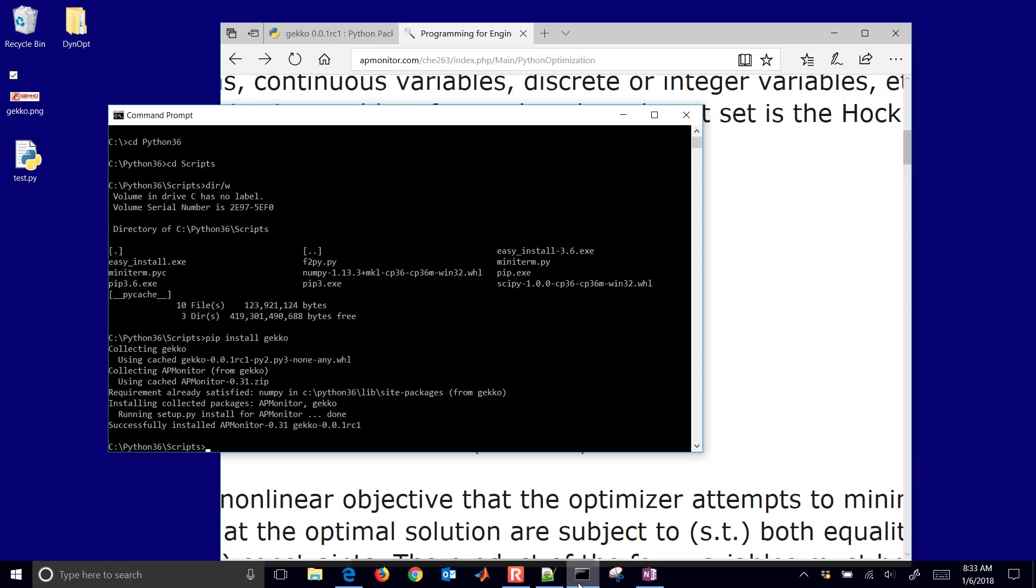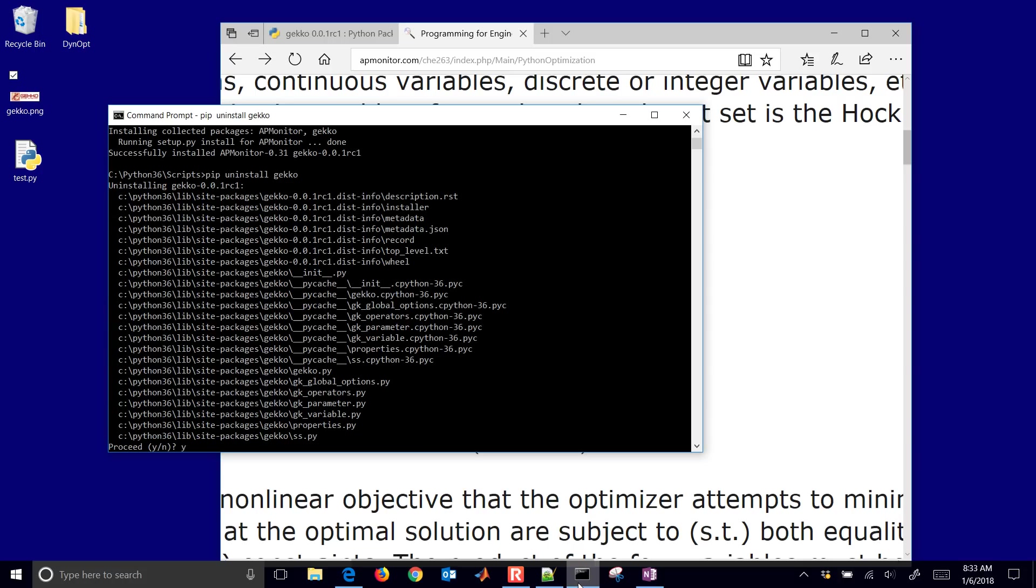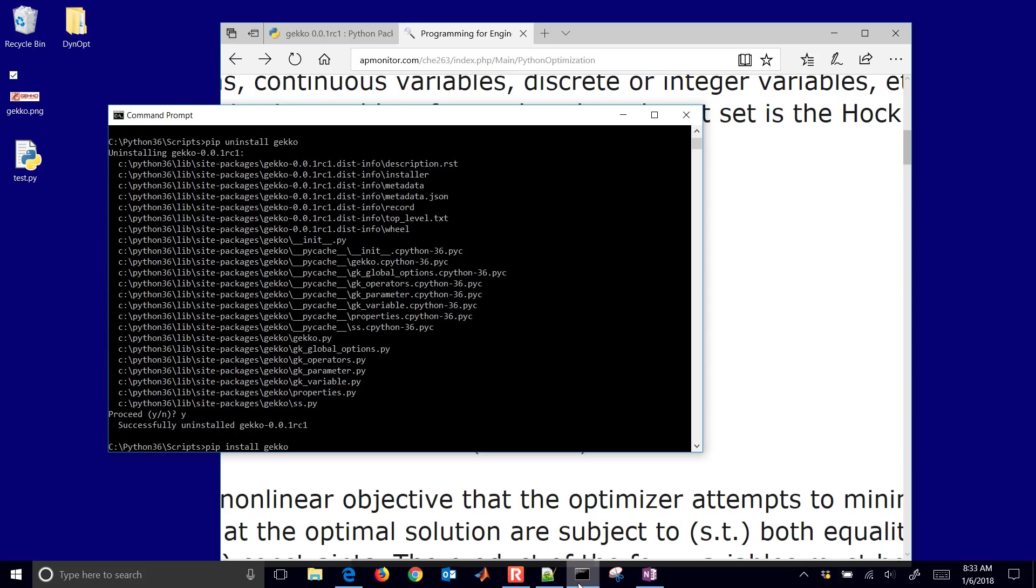So it's going to go out and get the dependency, which is APMonitor, and it's already satisfied the NumPy dependency. And you can also uninstall it if you want to. Uninstall GECCO or reinstall it again with pip.